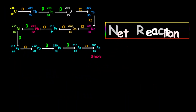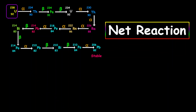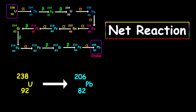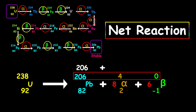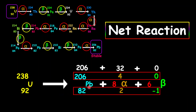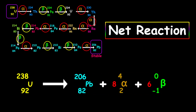Let's look at the net reaction. We started with uranium-238 and the product is lead-206. Throughout the entire decay series we have 8 alpha decays and 6 beta decays. To check the mass numbers: lead gives 206, alpha contributes 32 (8 times 4), and beta contributes 0 (6 times 0), totaling 238. For proton numbers: lead gives 82, alpha contributes 16 (8 times 2), and beta contributes negative 6 (6 times negative 1), totaling 92. So the overall net reaction checks out.